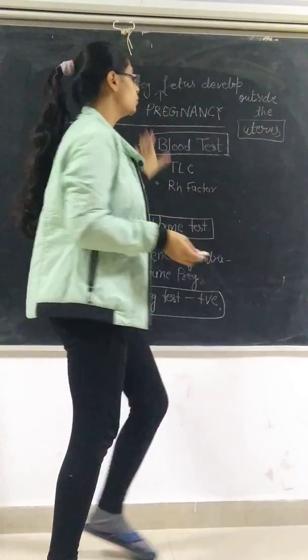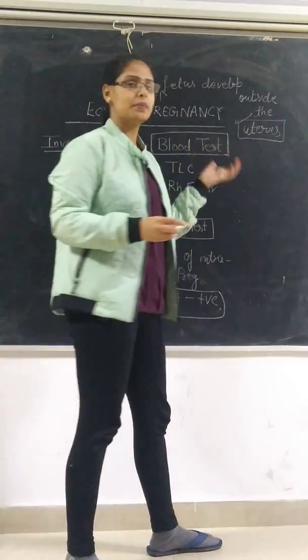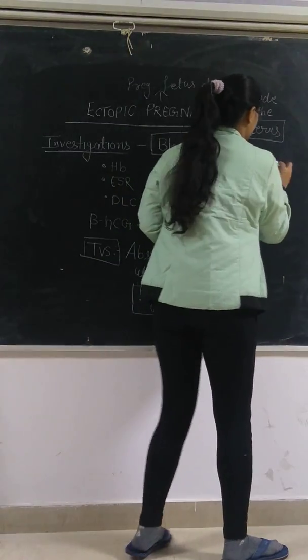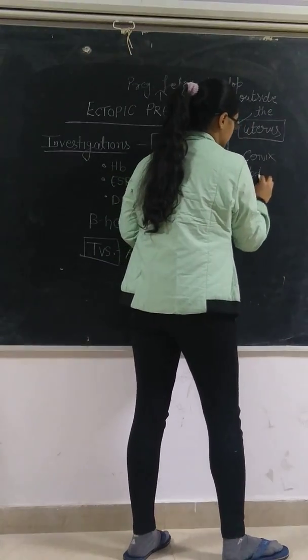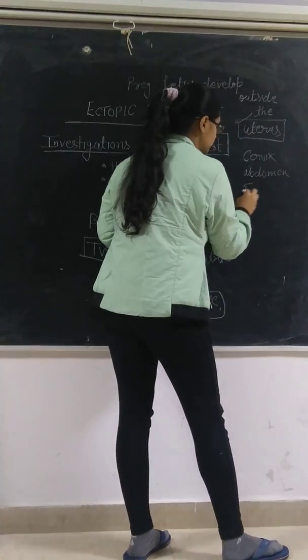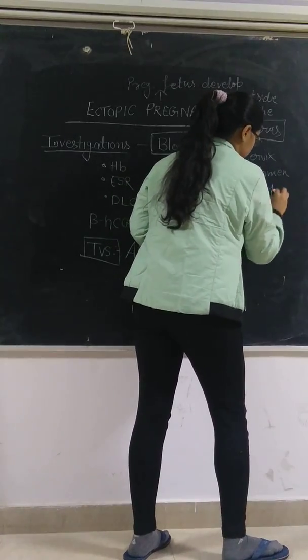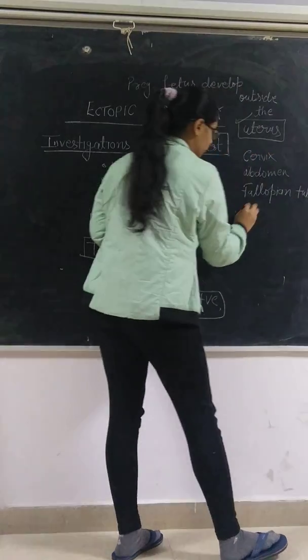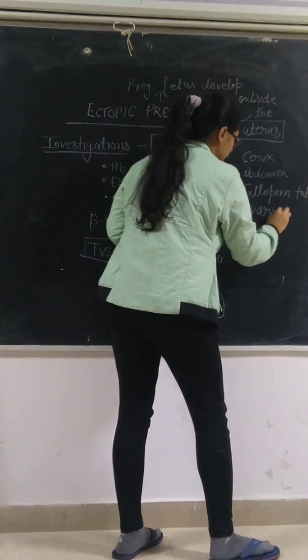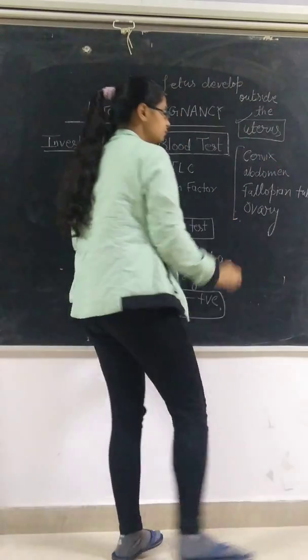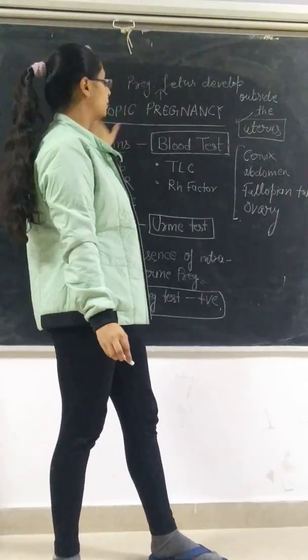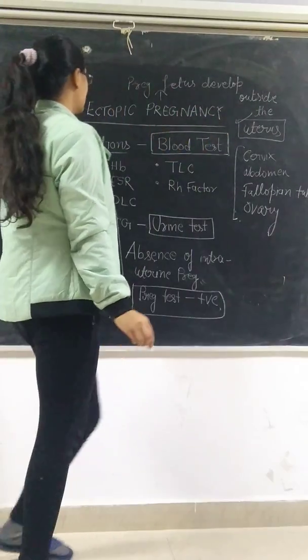The main point is that ectopic pregnancy can occur in the cervix, in the abdomen, in the fallopian tube, and in the ovary. These can be different types of ectopic pregnancy.